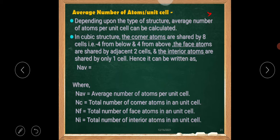Hence, it can be written as NAV equals NC divided by 8 plus NF divided by 2 plus NI divided by 1, where NAV is average number of atoms per unit cell, NC is total number of corner atoms in a unit cell, NF is total number of face atoms in a unit cell, NI is total number of interior atoms in a unit cell.